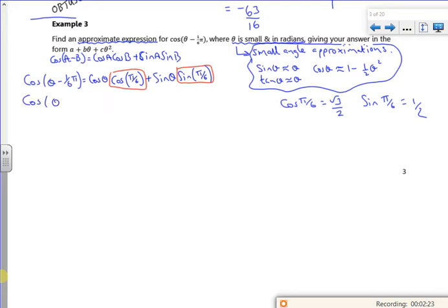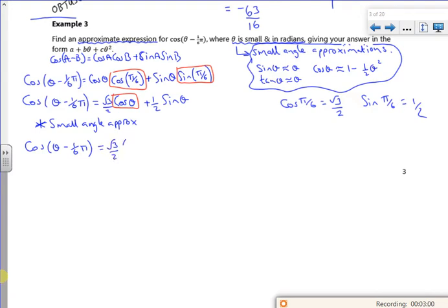So cos(θ - π/6). It's all algebra this, just faffing about with algebra. So it's √3/2 cos θ plus ½ sin θ. Right, now then, I'm going to use the small angle approximations. So now I'm going to replace cos θ with 1 - ½θ².